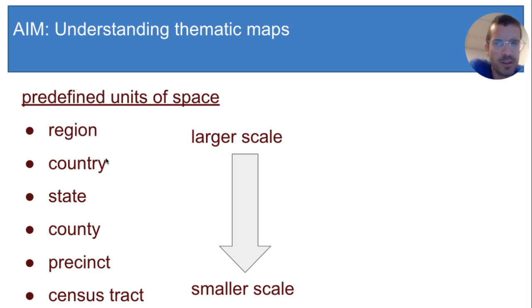Decreasing our scale, the next predefined area is a country like the United States. Going further, we have a state like New York or New Jersey. Below the state level, we have counties and below counties, you might see something called precincts.